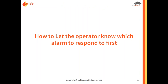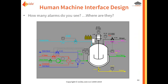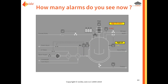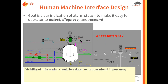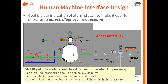How do you let the operator know which alarm to respond to first? This primarily comes down to the HMI — the human-machine interface — which should draw their attention and communicate which situation is most critical. A well-designed HMI makes alarms stand out clearly; they should jump off the page. By contrast, a poorly designed screen makes alarms difficult to distinguish. The coloring, priority, and visibility within the HMI should correlate to how important or critical the alarm is.